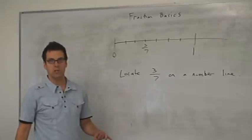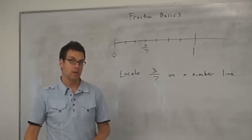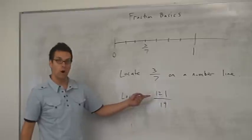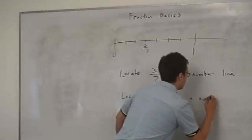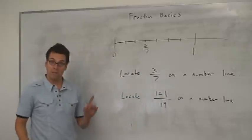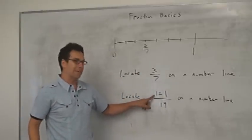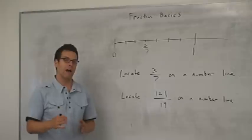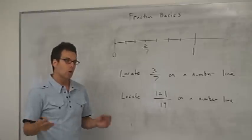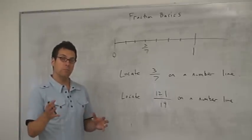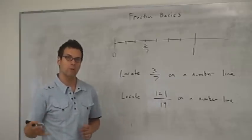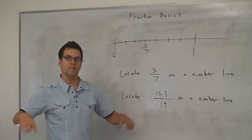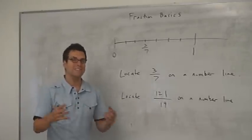This procedure can be used to find any fraction on a number line. For example, to locate 121 nineteenths, I would divide the interval from zero to one into 19 equal pieces, count 121 of those pieces, and wherever I land, that's 121 nineteenths. This shows us that fractions simply extend what we already know about whole numbers — an important point, because students often think fractions are somehow separate from whole numbers with different rules, when exactly the opposite is true.